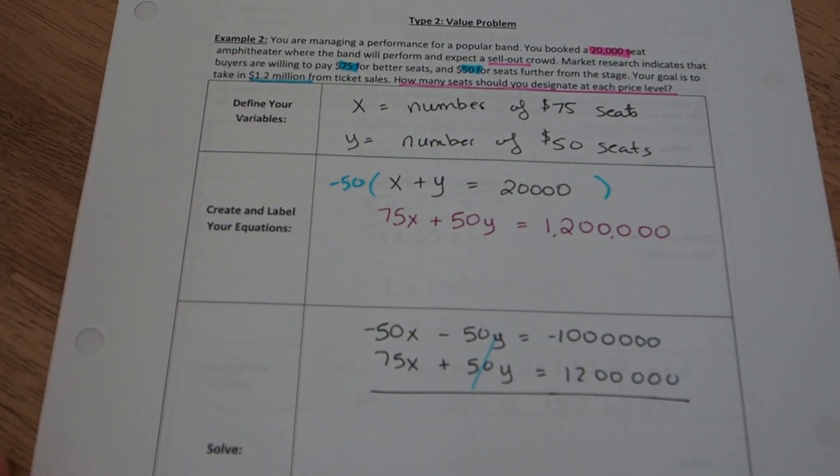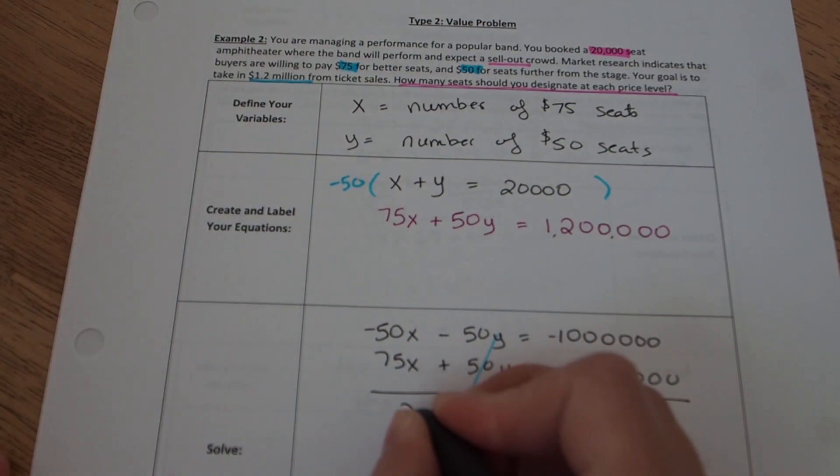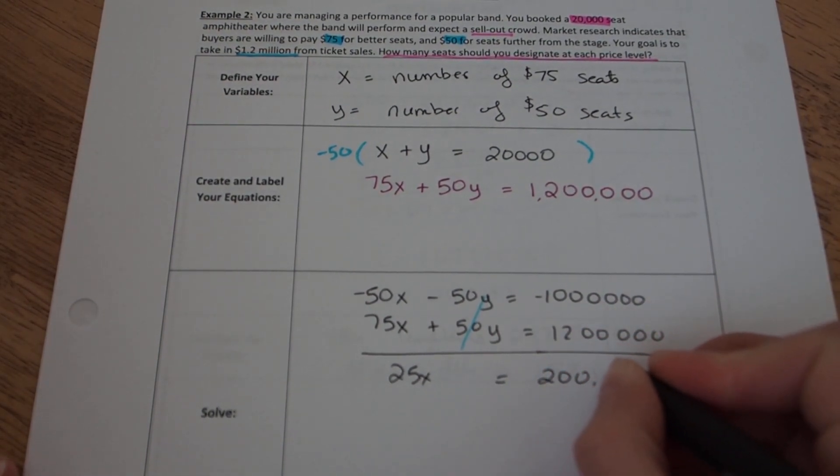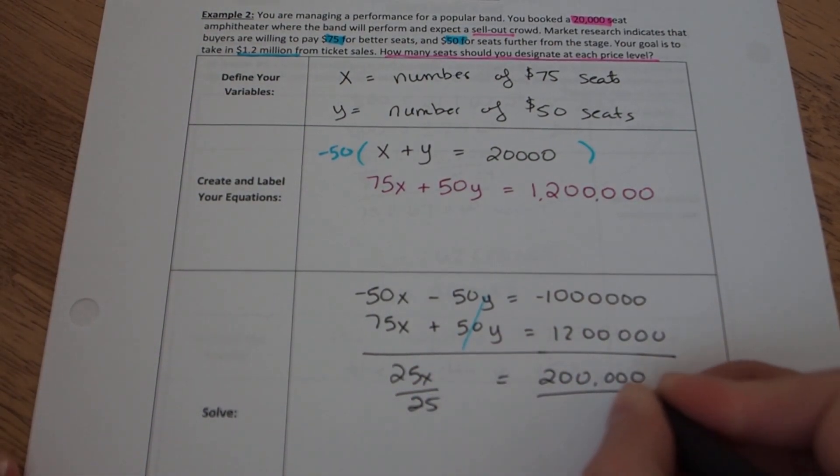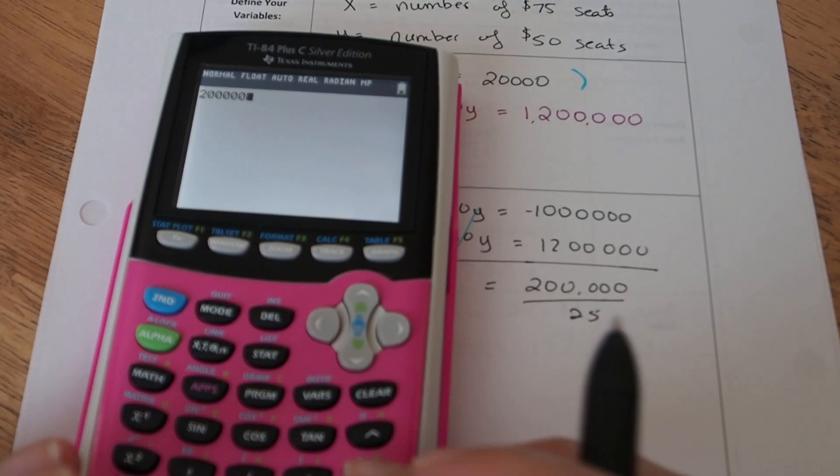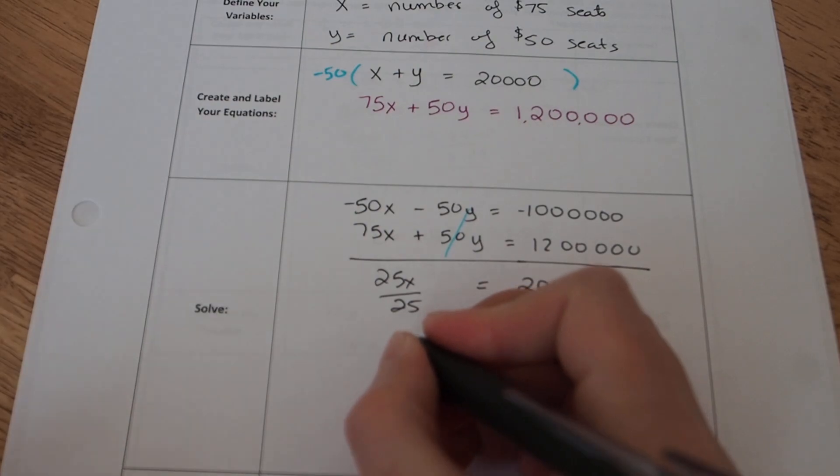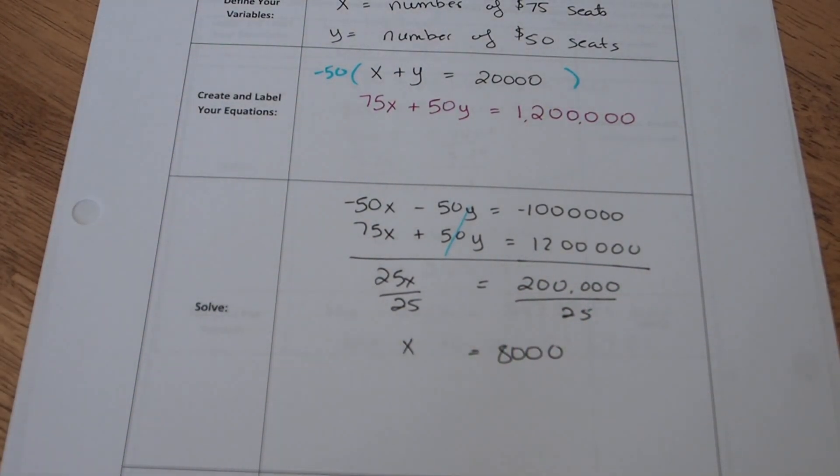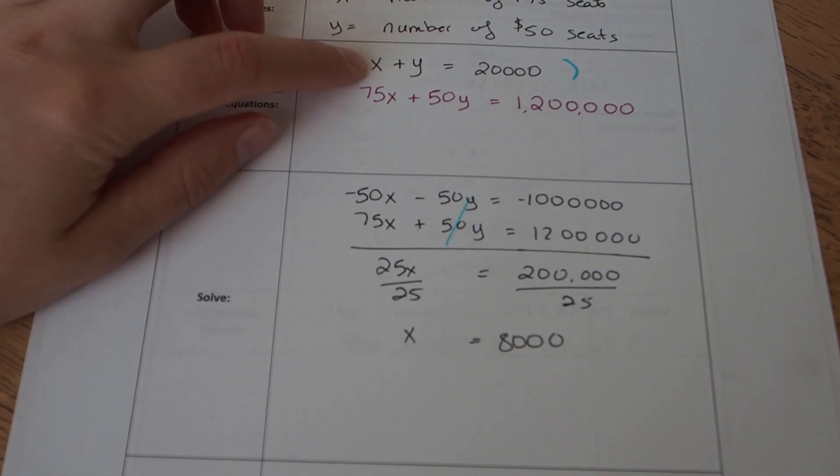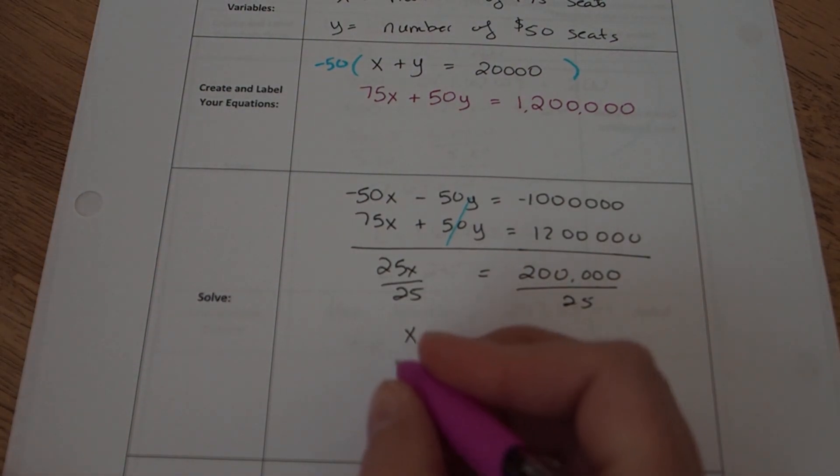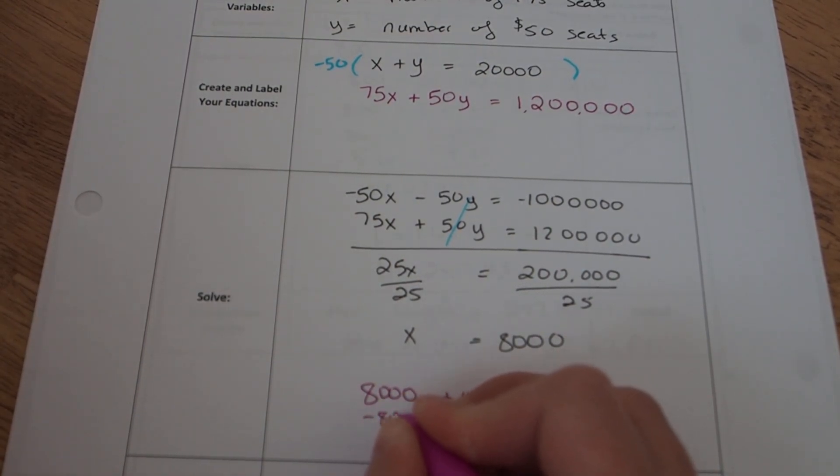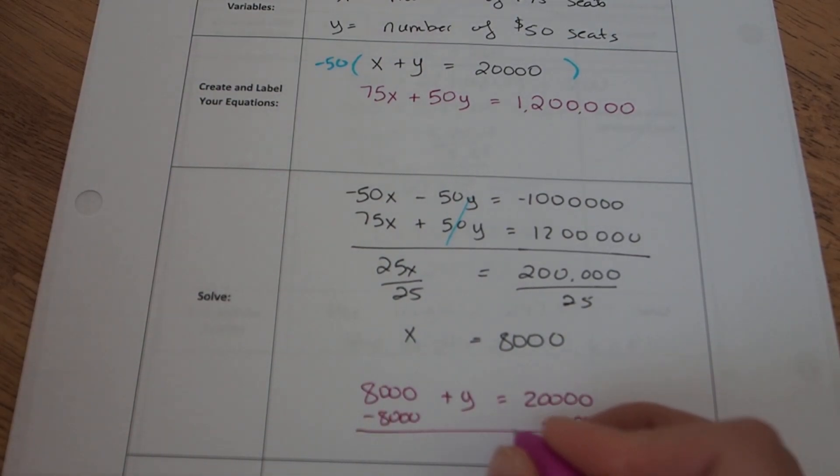So the y's add up to 0, and negative 50 plus 75 is going to be 25x. Negative 1,000,000 plus 1,200,000 is 200,000, and if you divide both sides by 25, we'll get our x value. So 200,000 divided by 25 gives me 8,000. Now that I know one of the variables, I need to plug it back into an equation to find the other. I'm going to use the top one in its original state because with no coefficients, that one's going to be the easiest one to plug values into. So I'm going to have 8,000 plus y equals 20,000, and if you subtract 8,000 from both sides, 20,000 minus 8,000 should be 12,000.